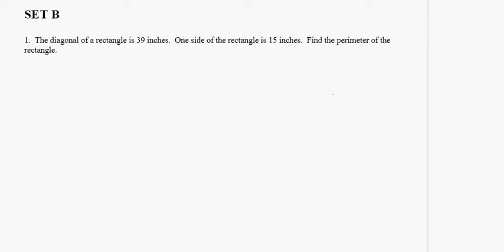The diagonal of a rectangle is 39 inches. One side of the rectangle is 15 inches. Find the perimeter of the rectangle.